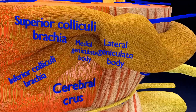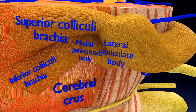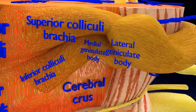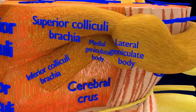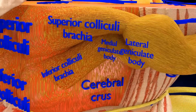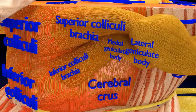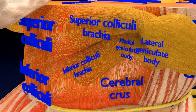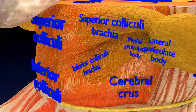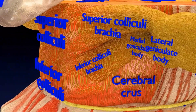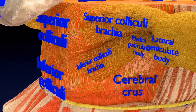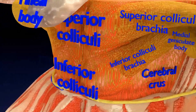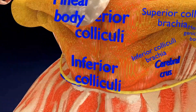The pathway is: retina, optic nerve, optic tract, lateral geniculate body, Edinger-Westphal nucleus, to both-side ciliary ganglia via the oculomotor nerve, and finally bilateral pupillary constriction.